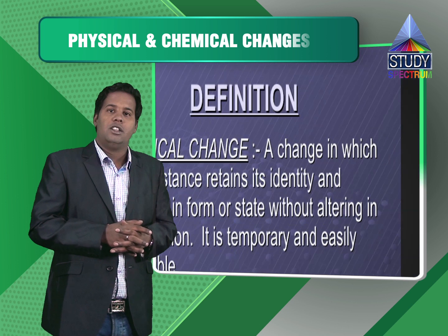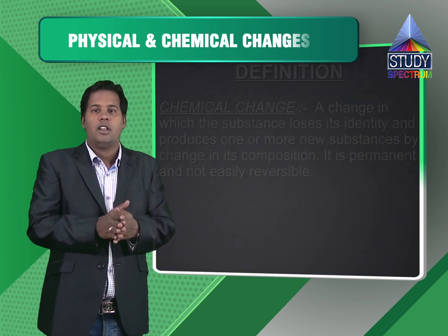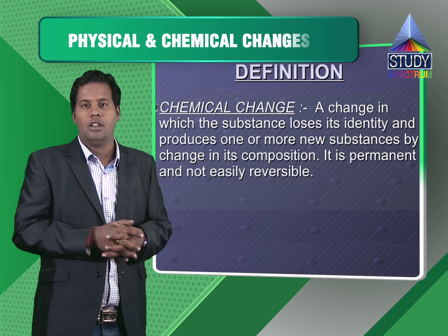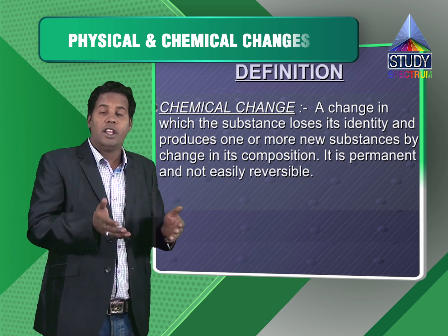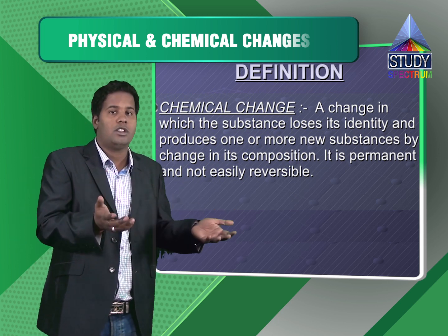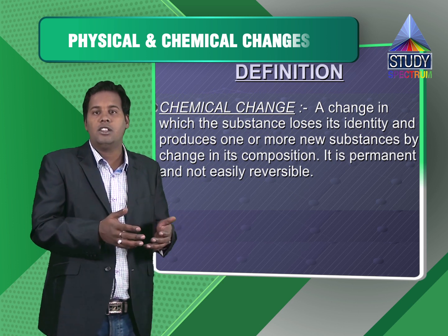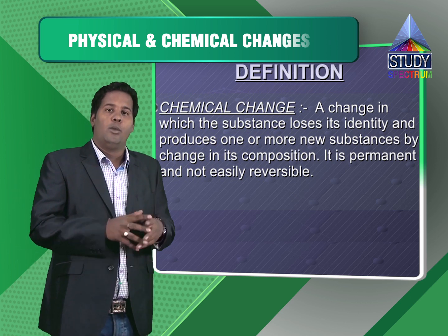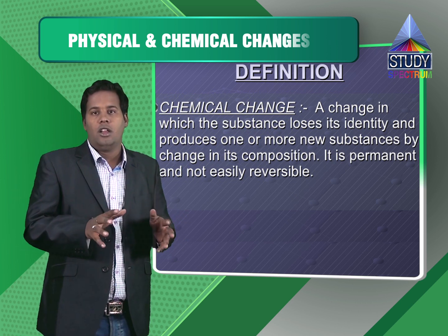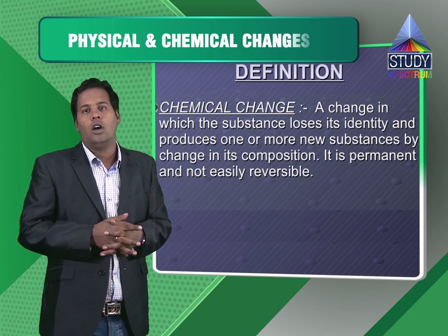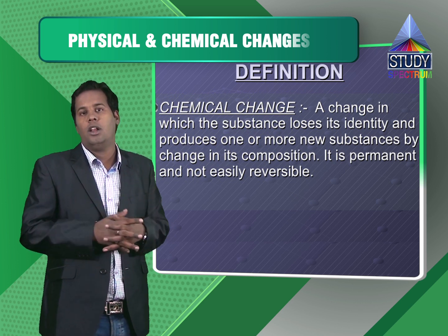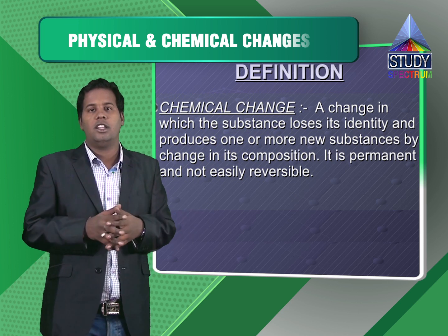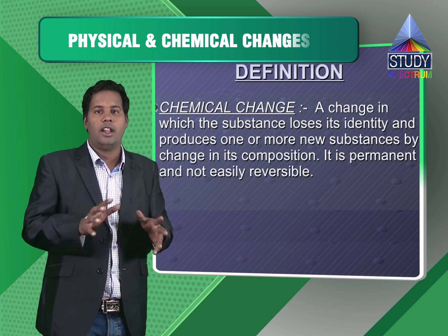We have talked about chemical changes — when the properties of a substance change, that change is called a chemical change. New substances are formed, one or more. In physical change, no new substances were formed, but in chemical change new substances are formed. Most chemical changes are irreversible, though there are few which are reversible. And even if you want to reverse a chemical change, it cannot be done with physical means.